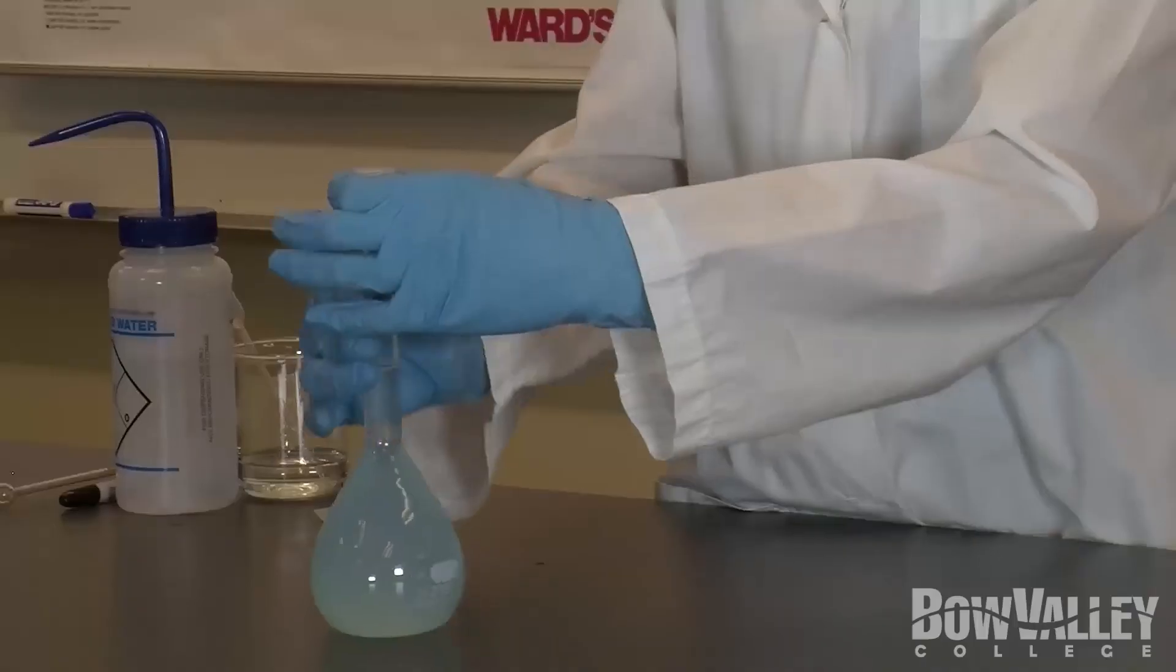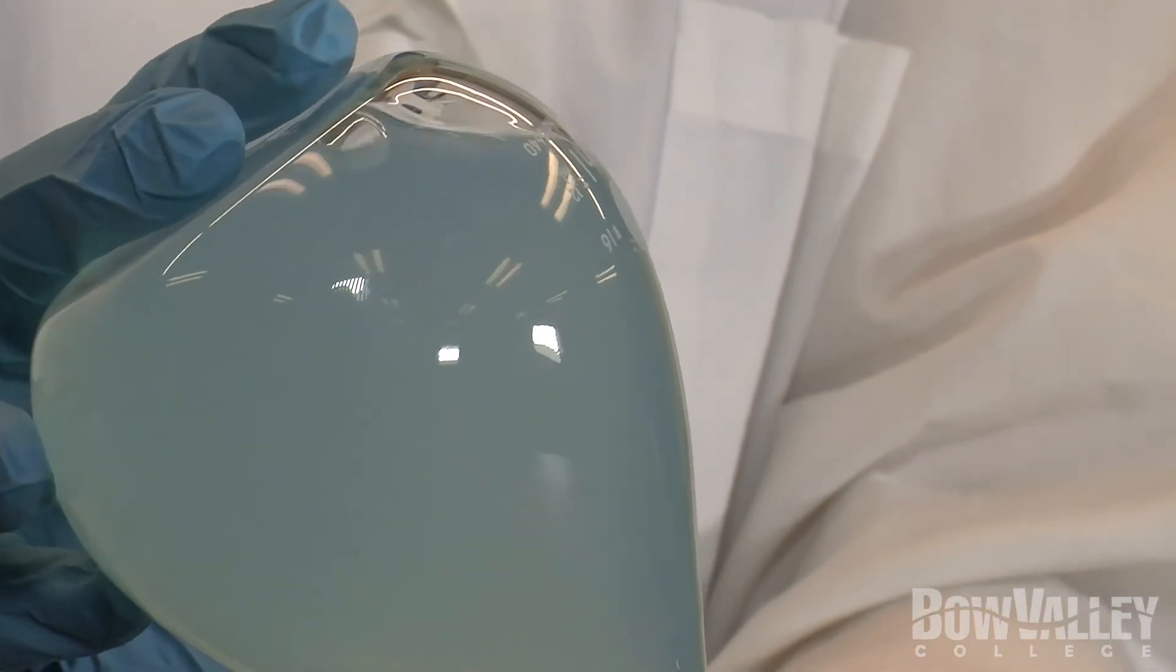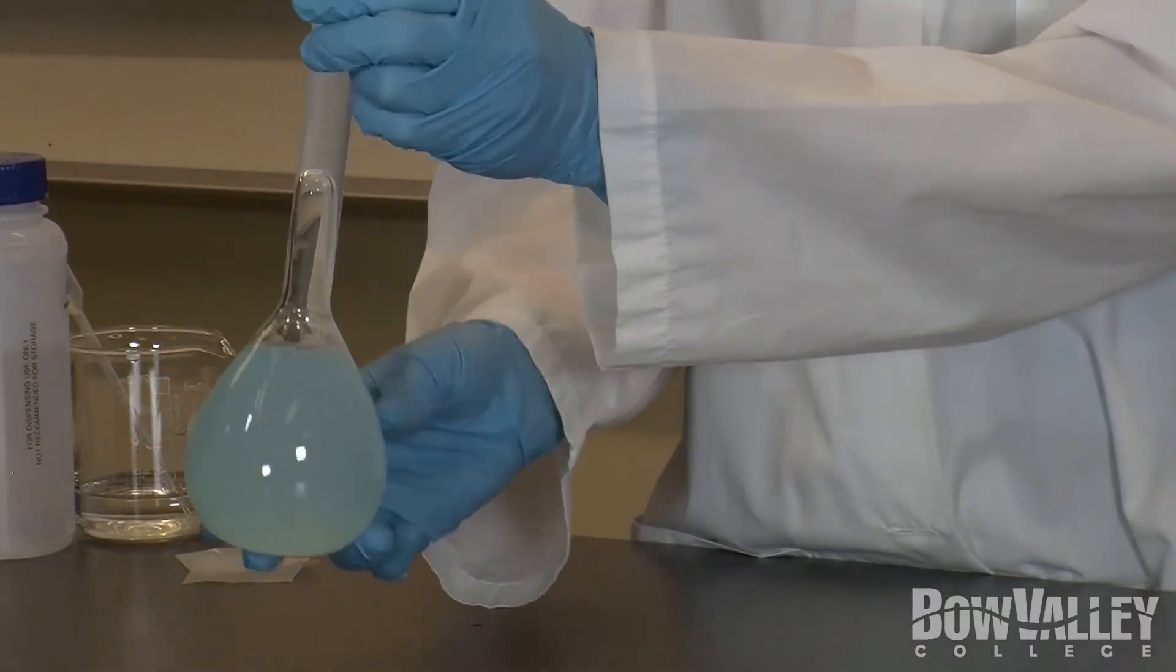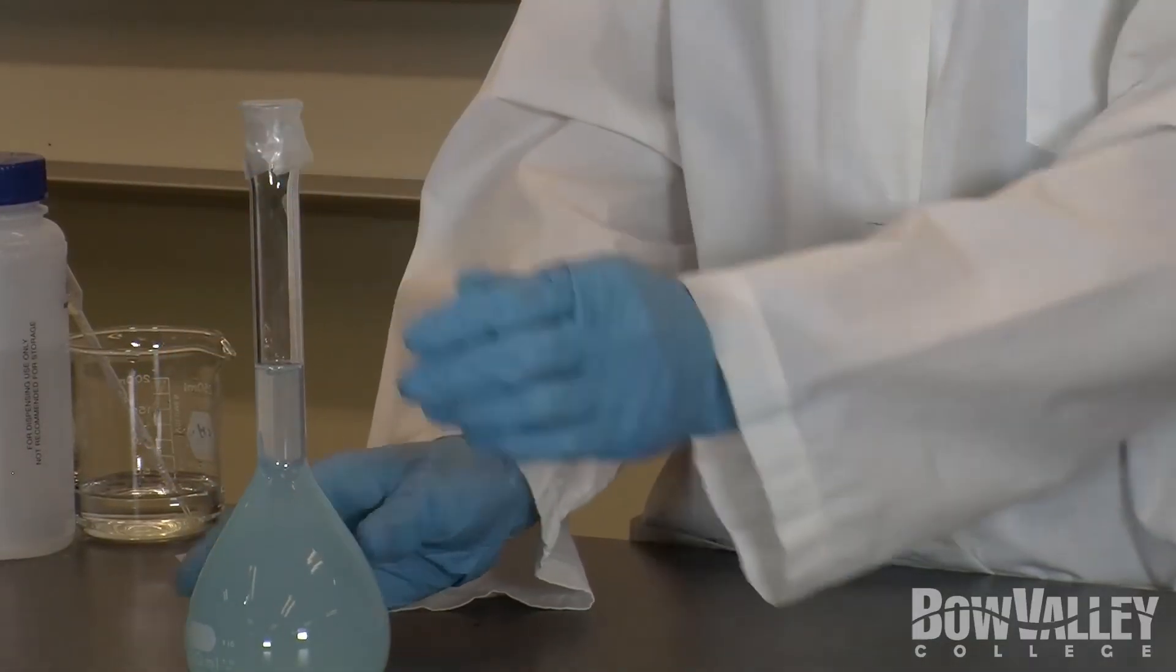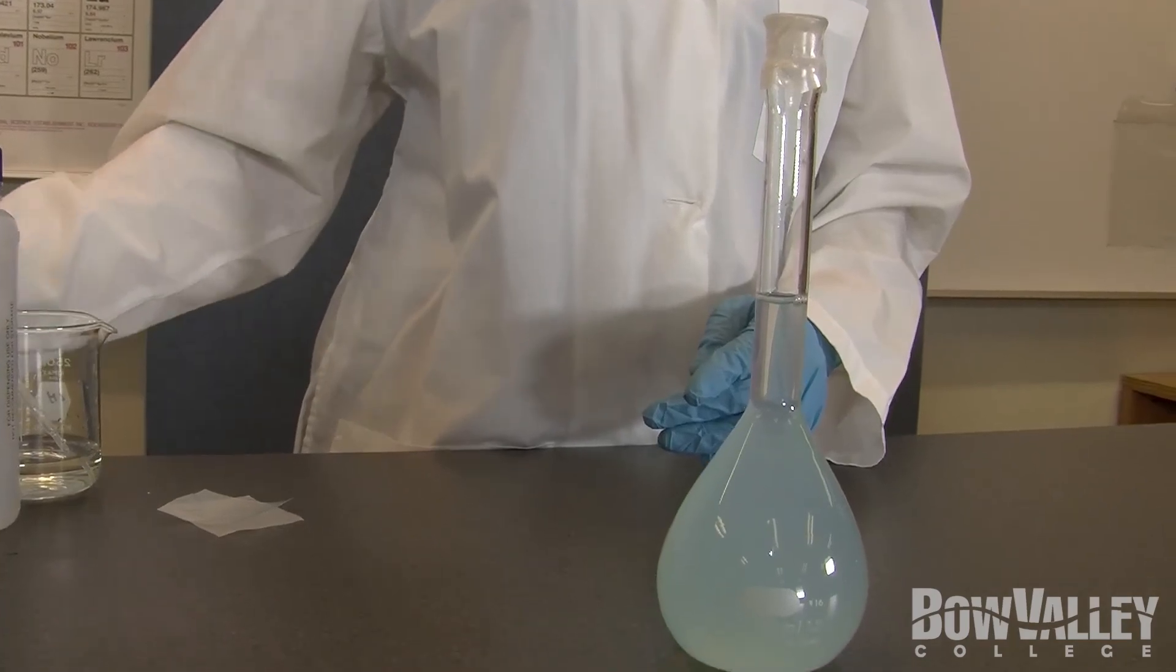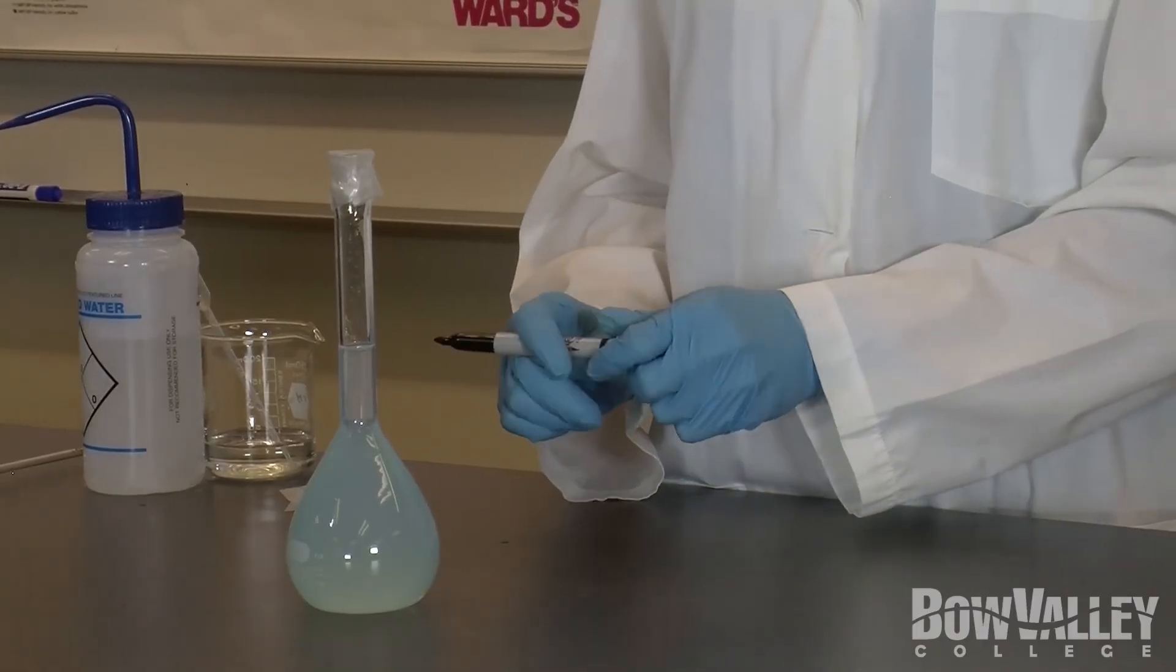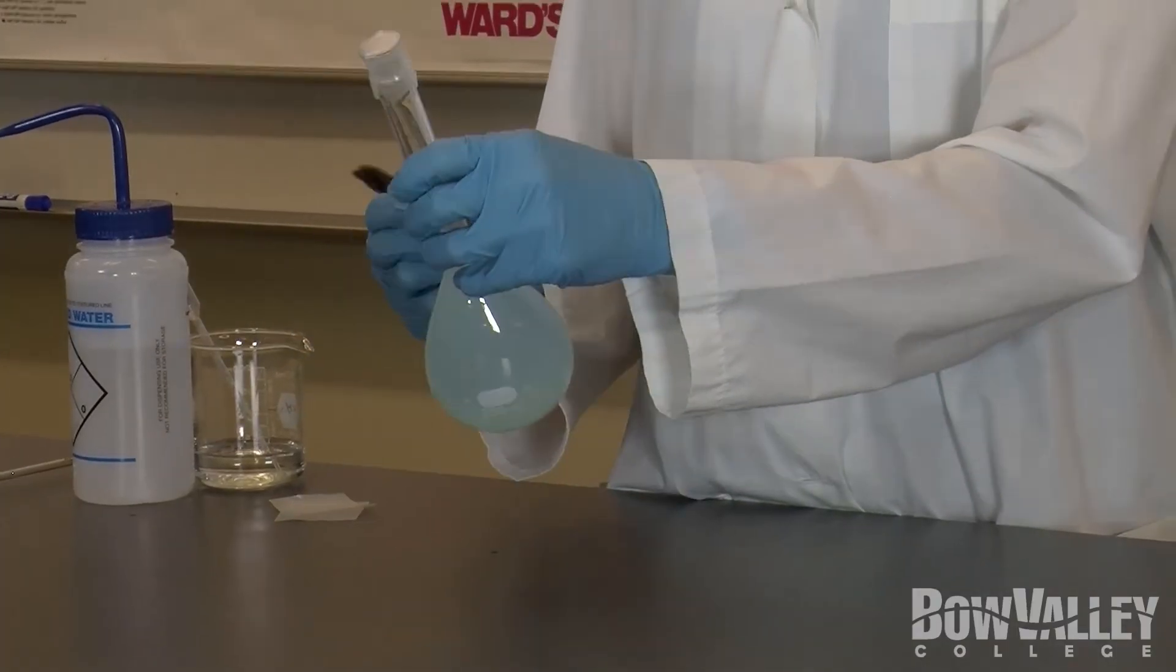Seal the flask with parafilm and gently invert to mix thoroughly. Label your flask. Your diluted solution is now ready for use.